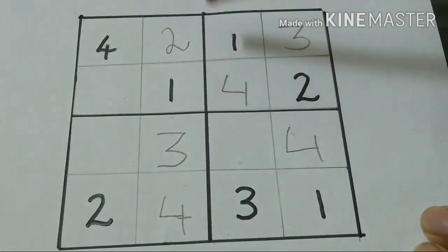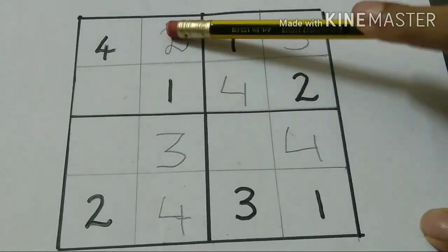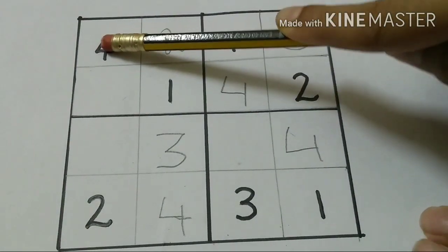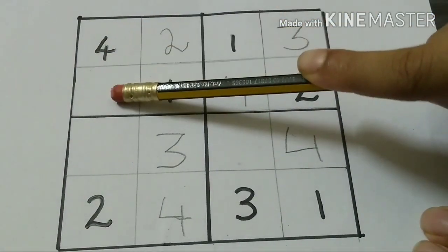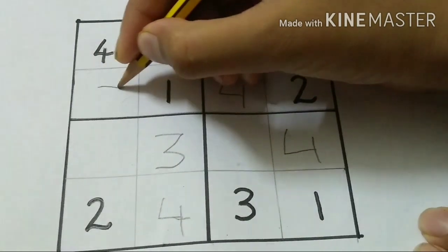Now let's take this box. There is 1, 2, and 4. 3 is the remaining number, so we have to write 3.